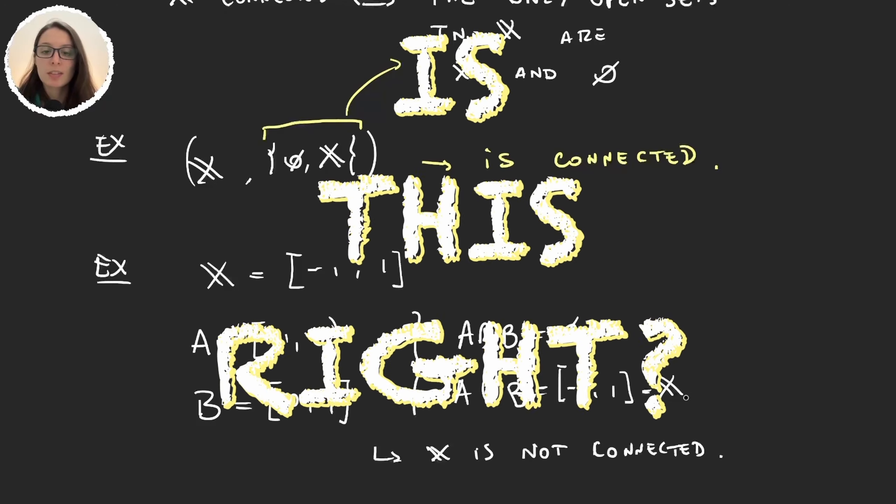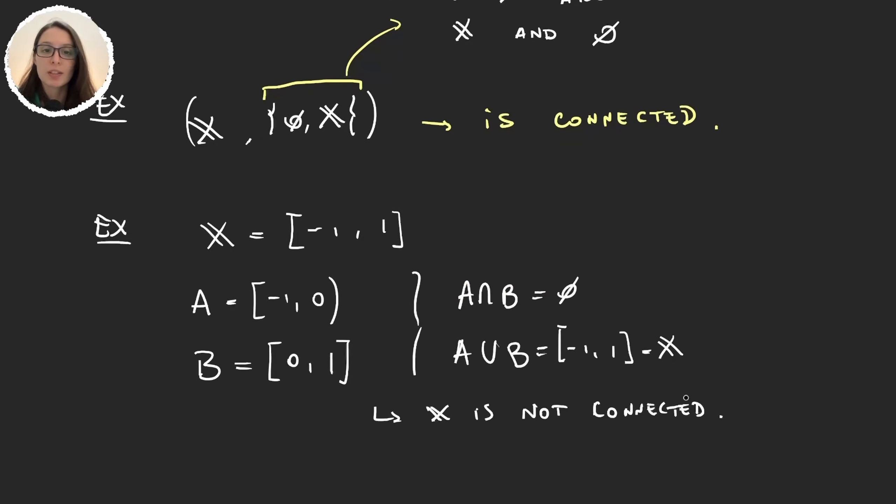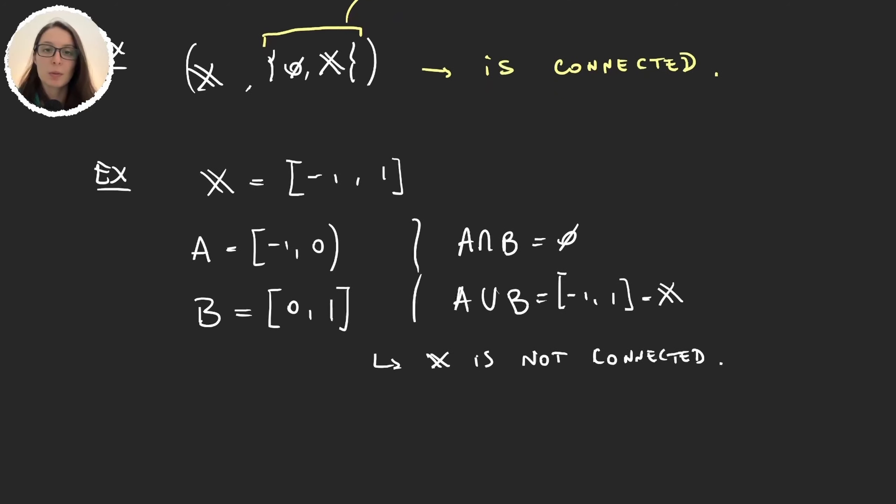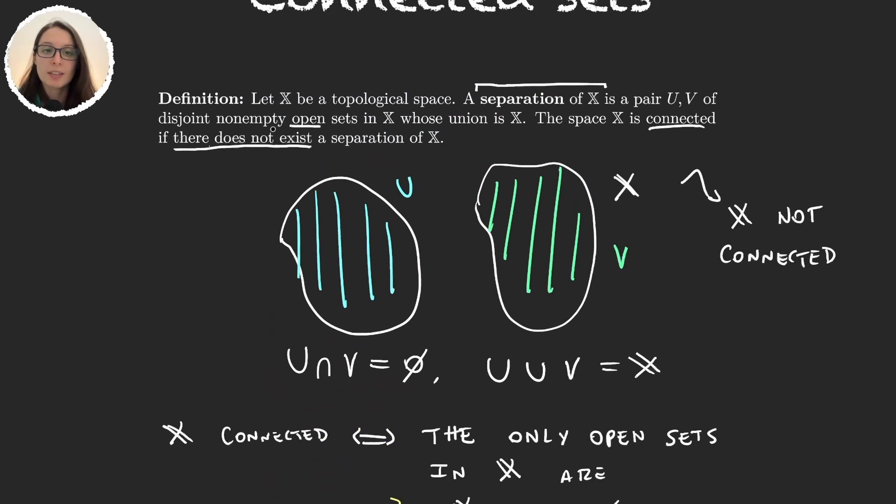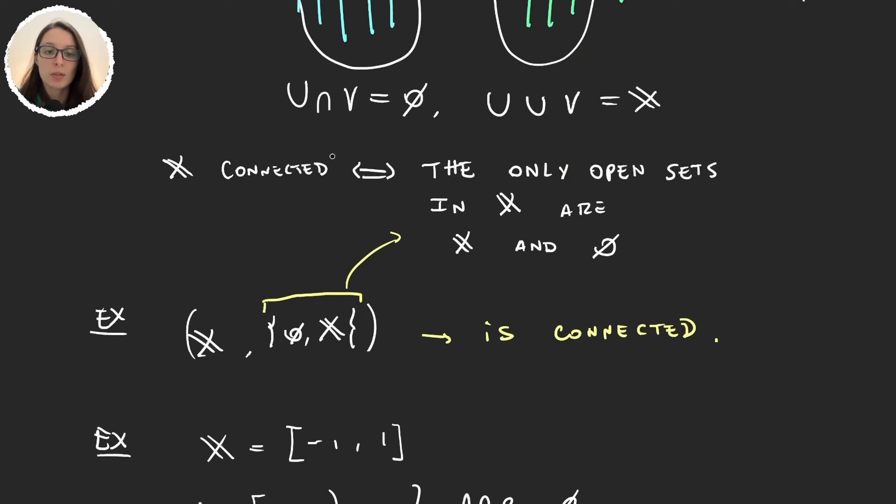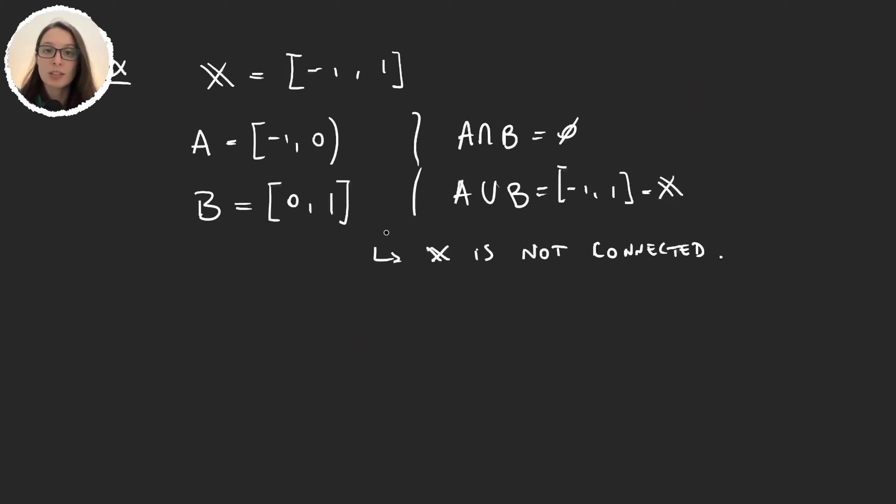And so this would tell me that we have a separation and so our space is not connected. Is this right? Well let me tell you something, it's not. Try and find the error yourself. Now I will tell you what is wrong with this. There was one extra thing I said that was very important and is that these sets have to be open.